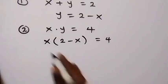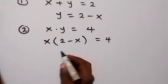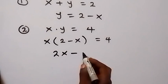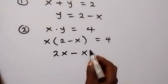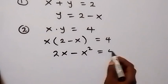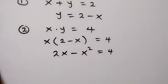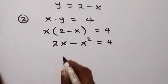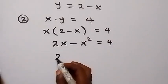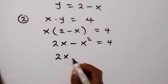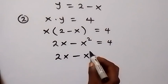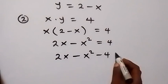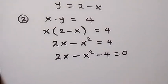Then when we open this bracket with x, this becomes 2x minus x squared equals to 4. Then let's take 4 to this side and this will be 2x minus x squared minus 4 equals to 0.